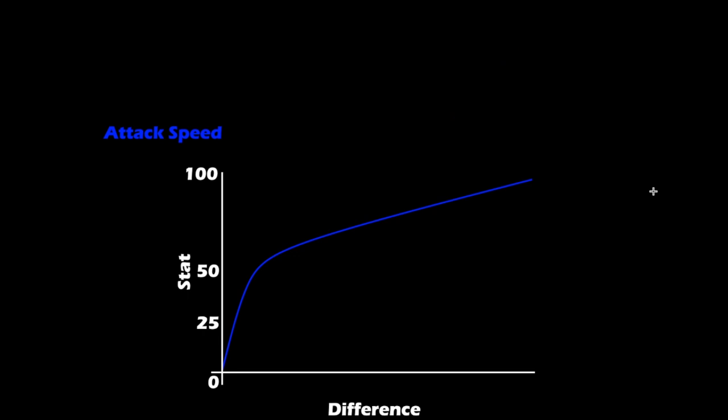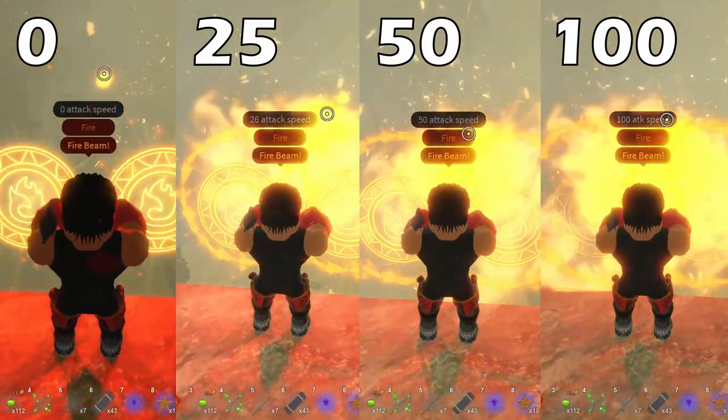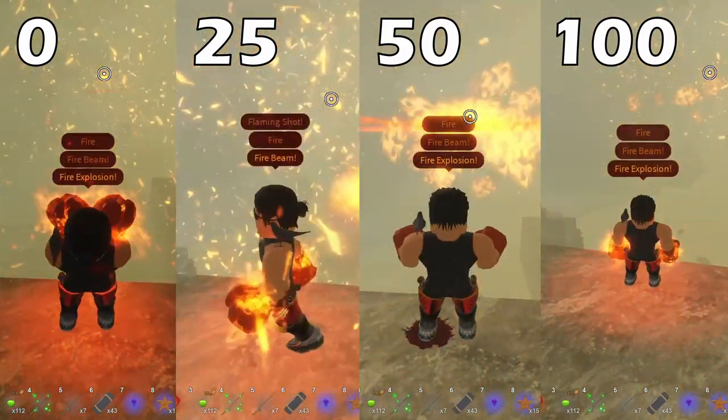For slow magics like magma, earth, or metal, there's no point getting attack speed — they stay slow regardless. Personally, I value attack speed highly and would trade damage for it, because being faster allows more hits in the same time window, which can yield more total damage even if each hit is weaker. Shown here is a side-by-side of casting speed at zero, 25, 50, and 100 attack speed from left to right.